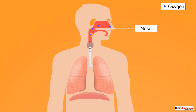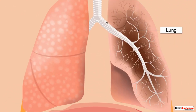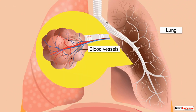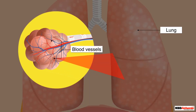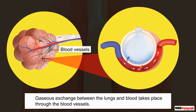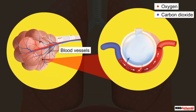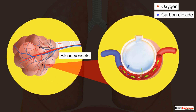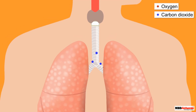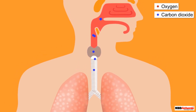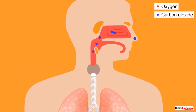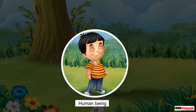Air enters through the nose and then reaches the lungs with the help of the windpipe that connects the nose to the lungs. Inside the lungs, there are numerous blood vessels. Through these blood vessels, gaseous exchange takes place between the lungs and blood. Oxygen moves from the lungs into the blood, while the blood releases carbon dioxide into the lungs. This carbon dioxide then moves from the lungs to the nose and out of the body.